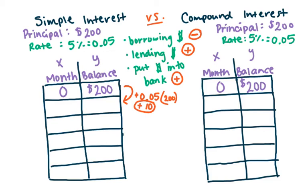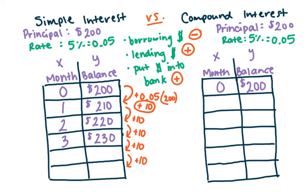So I'm going to be adding 10 every time. So after one month, my balance in the bank is $210. Since it's simple interest, I'm adding that amount every time. I'm going to add 10 every single month. So after two months, I will have $220. After three months, I'll have $230. Four months, $240. And after five months, $250.